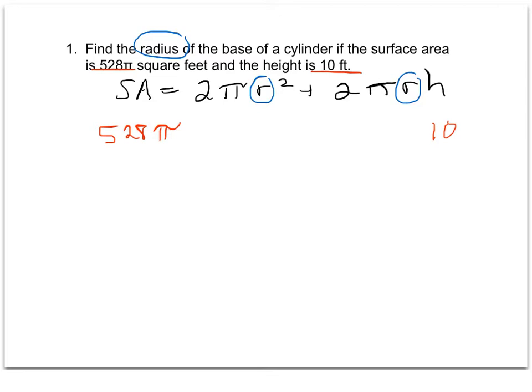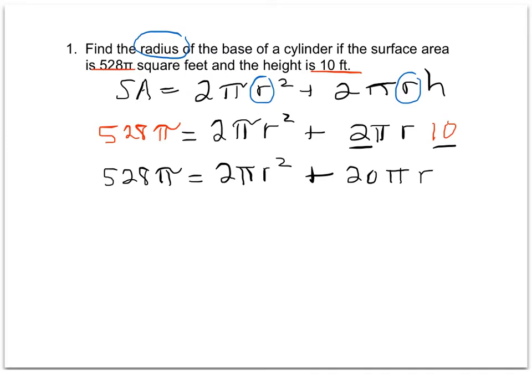We're just going to fill in the rest of the formula and see what we have. So the total surface area of 528π equals, we're going to leave it in π form, 2πr² + 2πrh. I'm going to simplify this. 528π cannot be simplified anymore because we're leaving it in π form. But I have 2 times π times r times 10, so I'm going to combine the 2 times 10 equals 20πr.